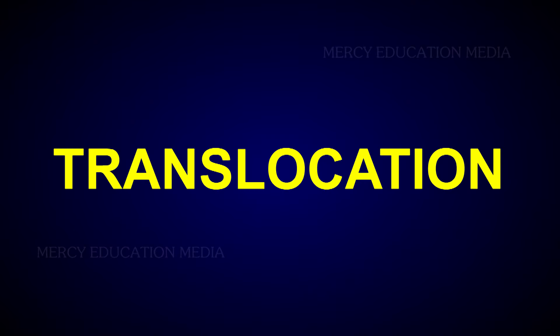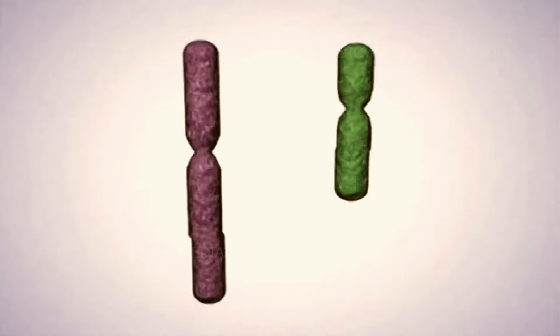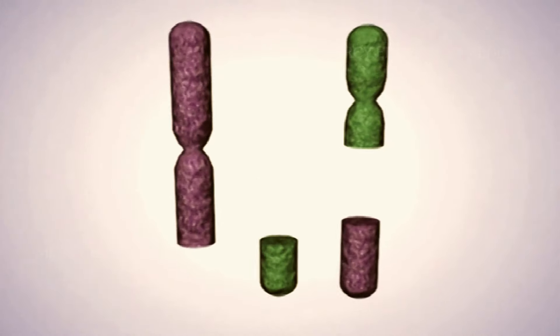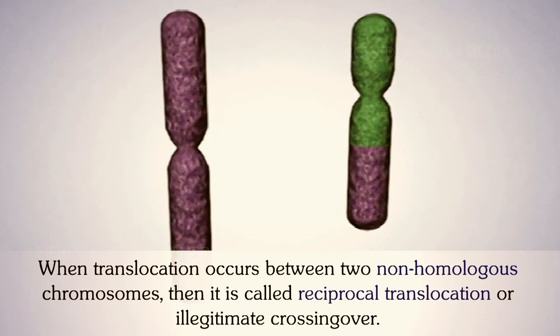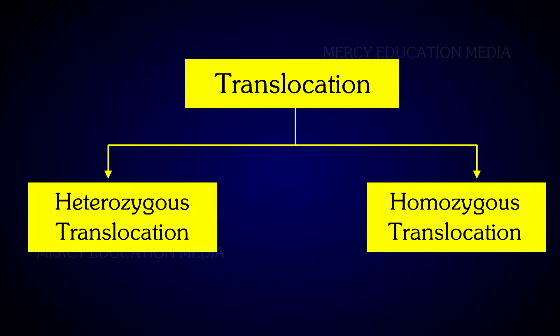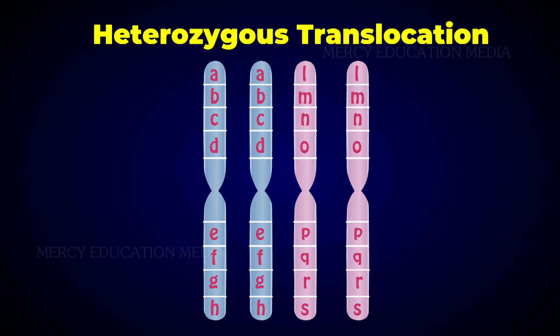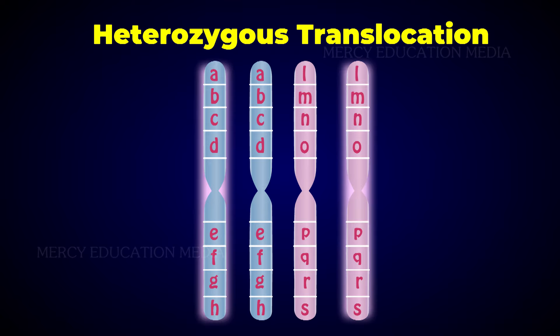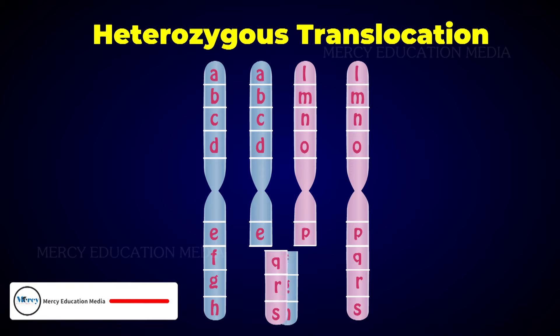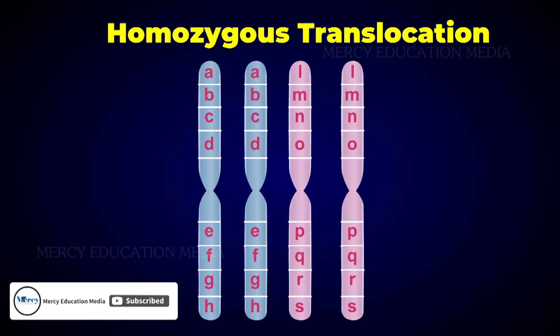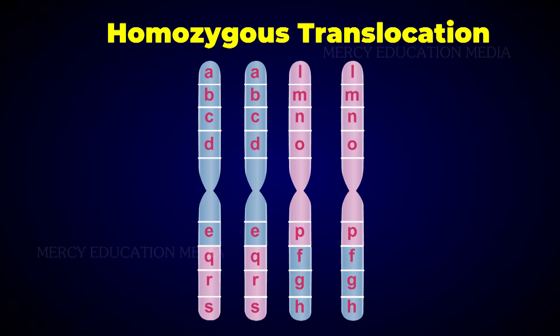Translocation is a kind of chromosomal abnormality in which the interchange of the chromosomal segment occurs. When translocation occurs between two non-homologous chromosomes, it is called reciprocal translocation or illegitimate crossing over. The translocation is divided into heterozygous translocation and homozygous translocation. In heterozygous translocation, one member of each pair of chromosomes is normal and the other member is with interchanged segment. In homozygous translocation, both the members of the paired chromosomes have translocated segments. They play an important role in species differentiation, and translocation causes hereditary disorders.